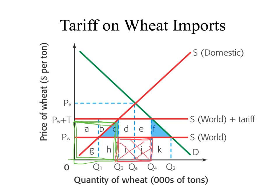Remember, foreign producers don't get DE. DE is going to be equivalent to this area right here — government revenue as a result of the tariff. And part F right here is going to be deadweight loss as a result of a drop in consumer surplus due to the artificially inflated price from the tariff.